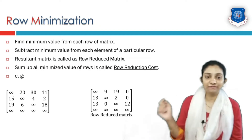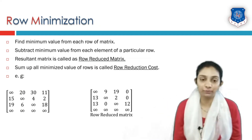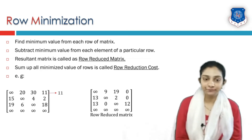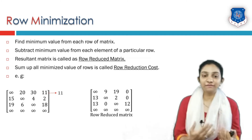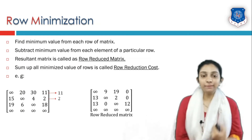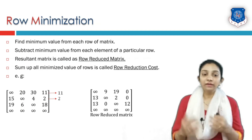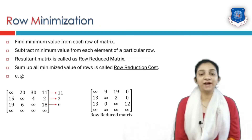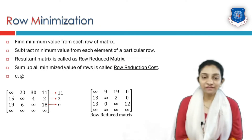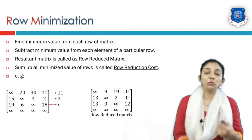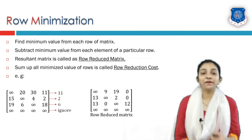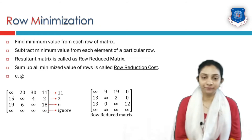From the first row the elements are infinity, 20, 30, and 11, so the minimum value is 11. From the second row the elements are 15, infinity, 4, and 2, so the minimum value is 2. From the third row the elements are 19, 6, infinity, and 18, so the minimum value is 6. From the last row all elements are infinity, so we ignore that row since we cannot find a minimum value. So the minimum values found from each row are 11, 2, and 6.